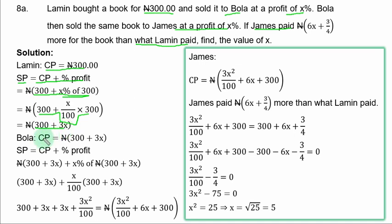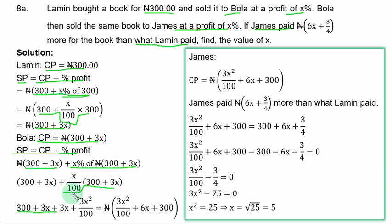The selling price for Lamy becomes the cost price for Bola. Bola's selling price = cost price + S% of cost price = (300 + 3S) + (S/100)(300 + 3S). Simplifying: 300 + 3S + 3S²/100 + 3S = 3S²/100 + 6S + 300. This is what James paid. Since James paid 6S + 3/4 more than Lamy's 300 Naira, we set up: Bola's selling price = 300 + 6S + 3/4.